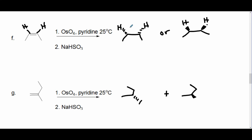In example f, the OHs add either from the top or from the bottom. Again this molecule has an internal plane of symmetry — the left side is a mirror reflection of the right side — so you only show one of the two drawn structures in your answer, because they are one and the same meso compound.